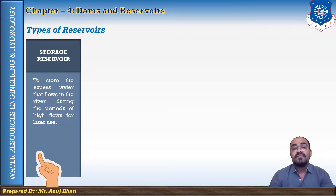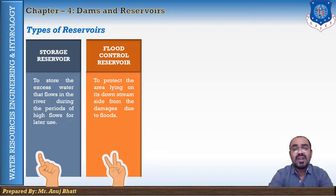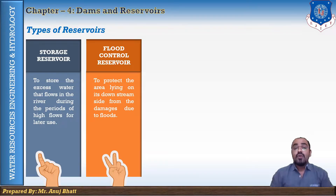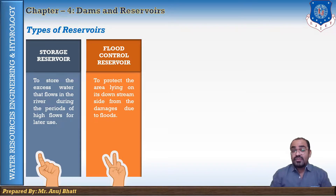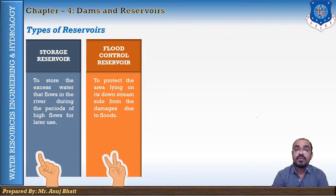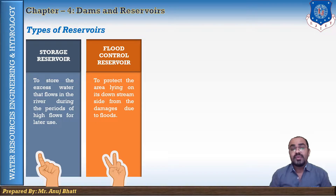The second type is the flood control reservoir. A flood control reservoir is constructed to protect the area on its downstream side from damages due to floods. Such a reservoir is also known as a flood protection reservoir or flood mitigation reservoir. A flood control reservoir is designed to moderate the flood and not to conserve the water.